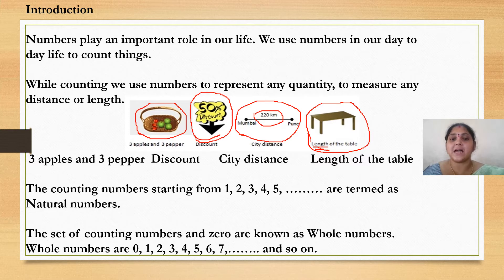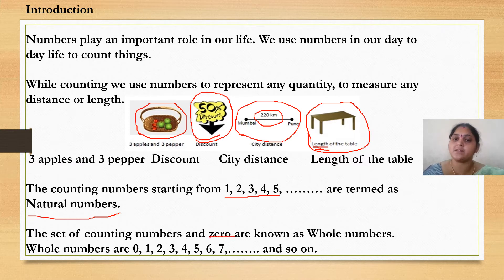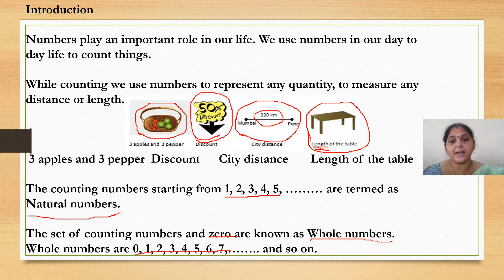The counting numbers starting from 1, 2, 3, 4, 5 are termed as natural numbers. Natural numbers start from 1 and there is no end to the numbers — those numbers are called natural numbers. The set of counting numbers along with 0 — if we are counting numbers along with 0, such type of numbers are known as whole numbers. Whole numbers are starting from 0, 1, 2, 3 and so on. We don't have any end of the numbers.